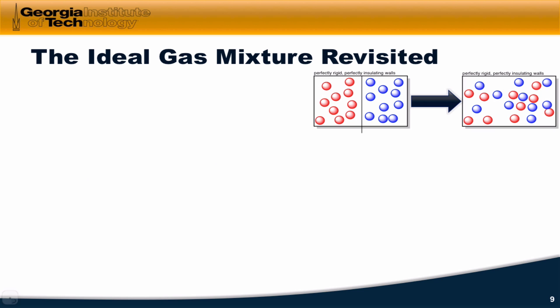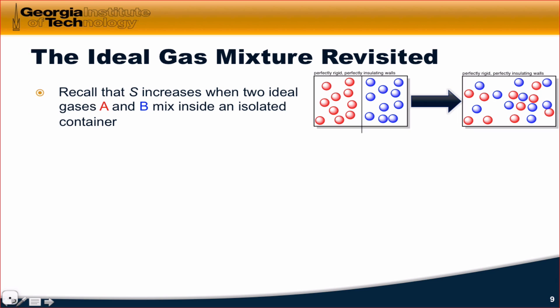So let's revisit this experiment of starting with two ideal gases on either side of a partition, removing the partition, and watching the gases spontaneously mix. Entropy increases during this process, and we can think of it not just as the two gases mixing, but as two different expansion processes taking place. This is actually a useful way to think about it.